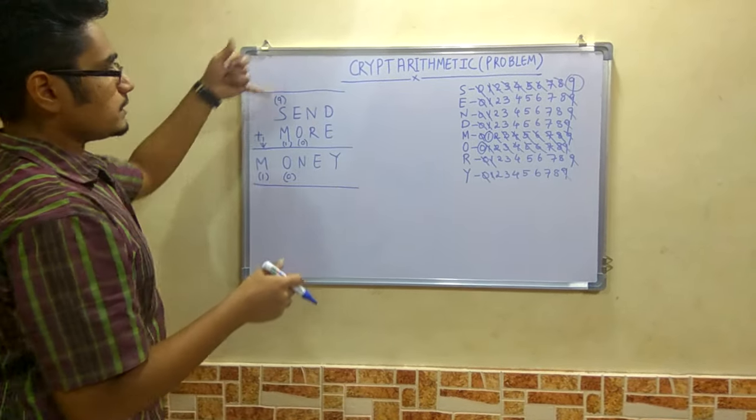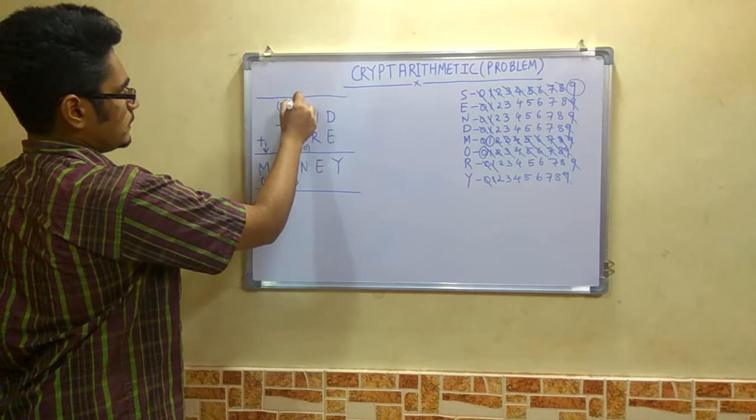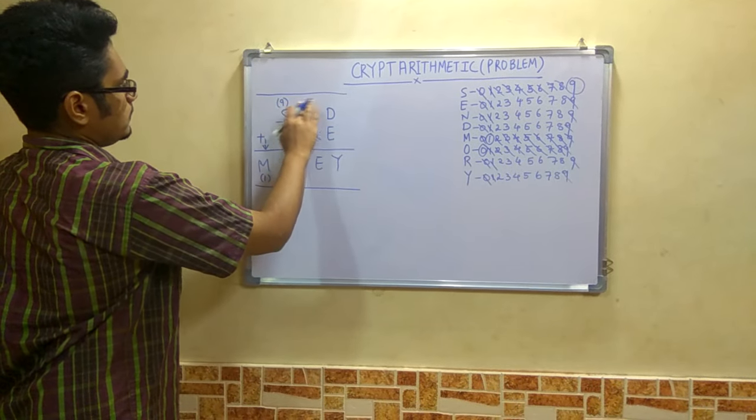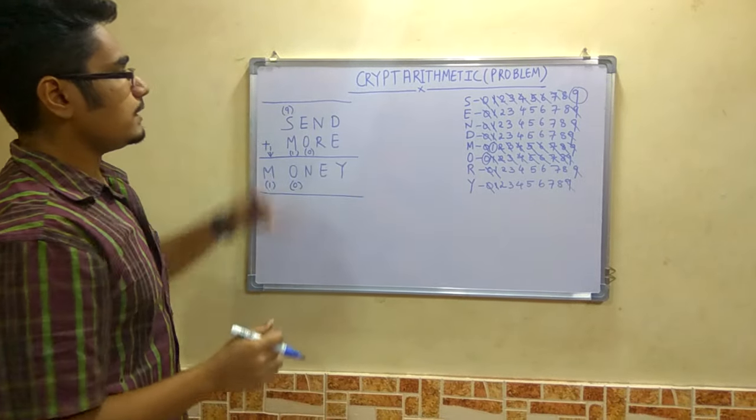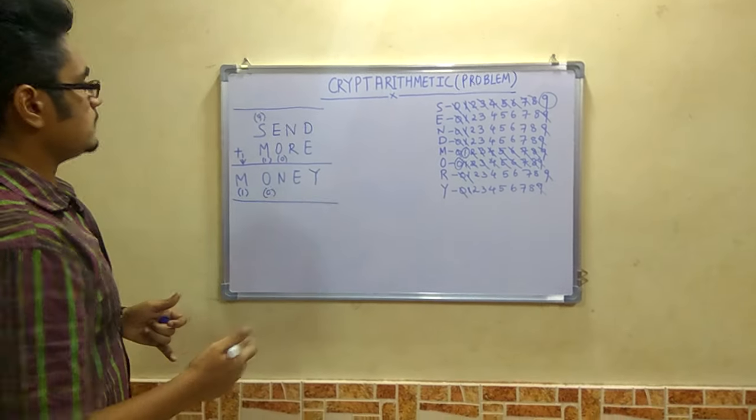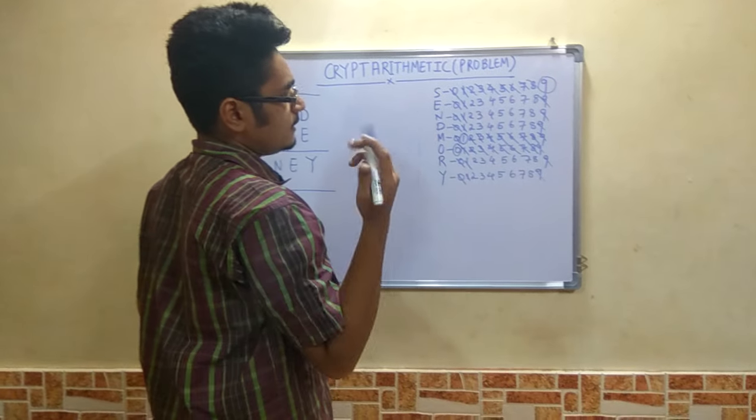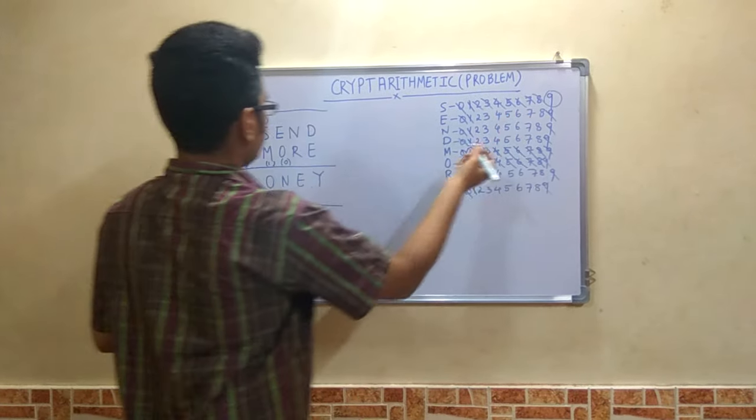If you put 3 also then also it will create such kind of problem. So 3 also is not the possible or the compatible value or the digit to this. Next you cannot try 4 also. It will also create the same. But a middle value of 5. You can assign 5 here.